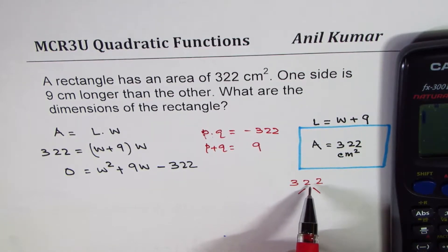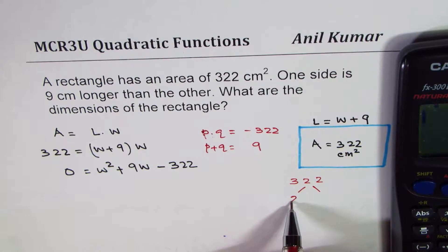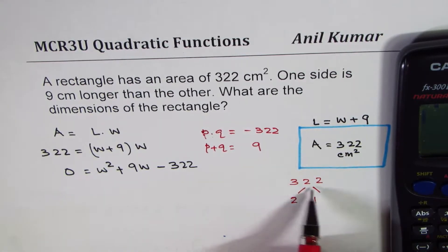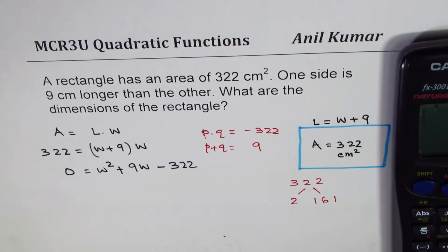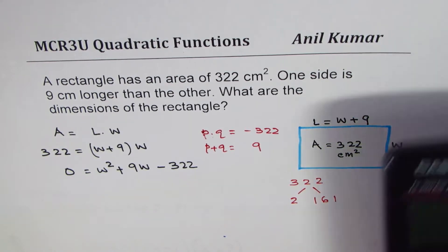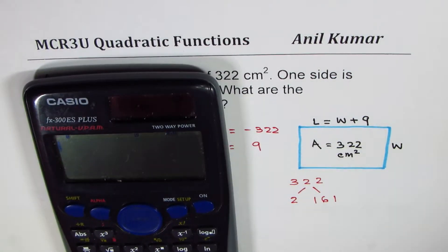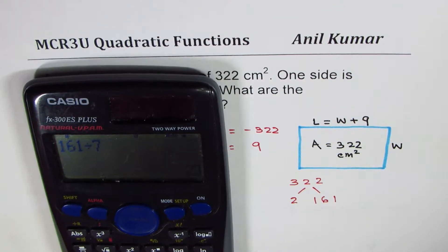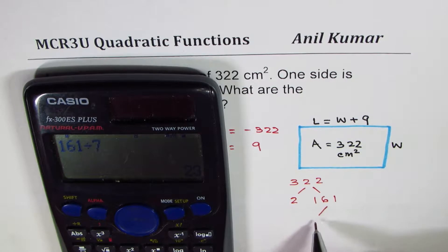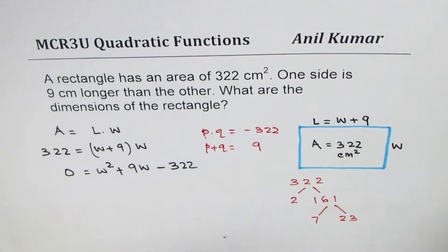So let's look into factors of 322. I could divide this by 2 - 2 is definitely a factor, 2 times 161. Now 161, what are factors of 161? So let's try dividing 161 by 7 which is 23. So we know the factors for 161 is 7 and 23.